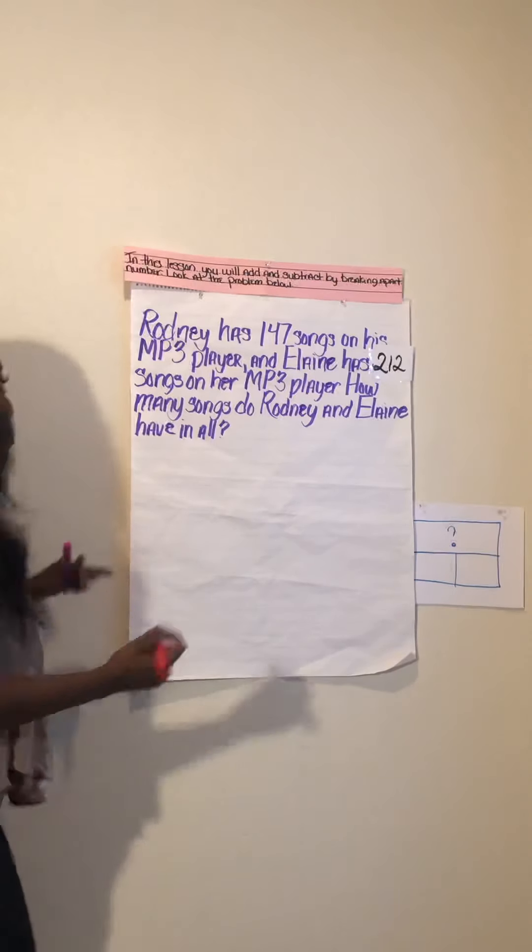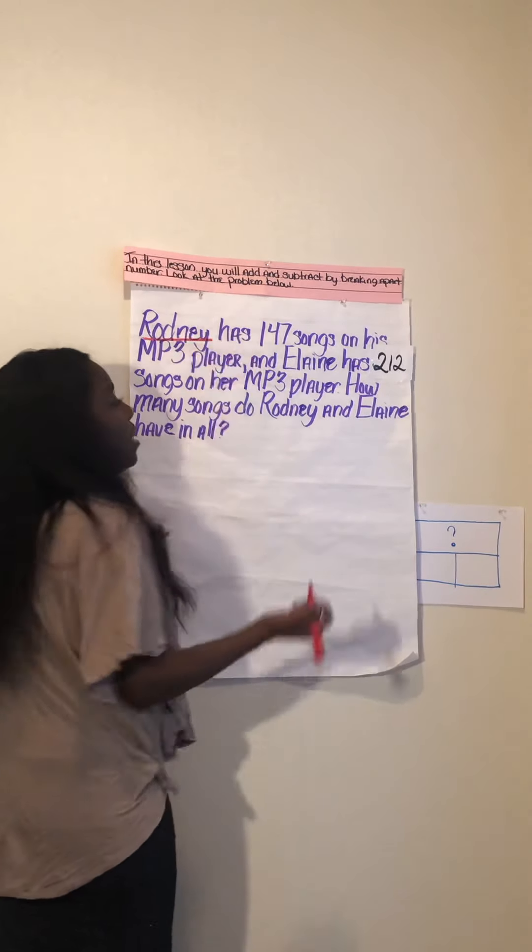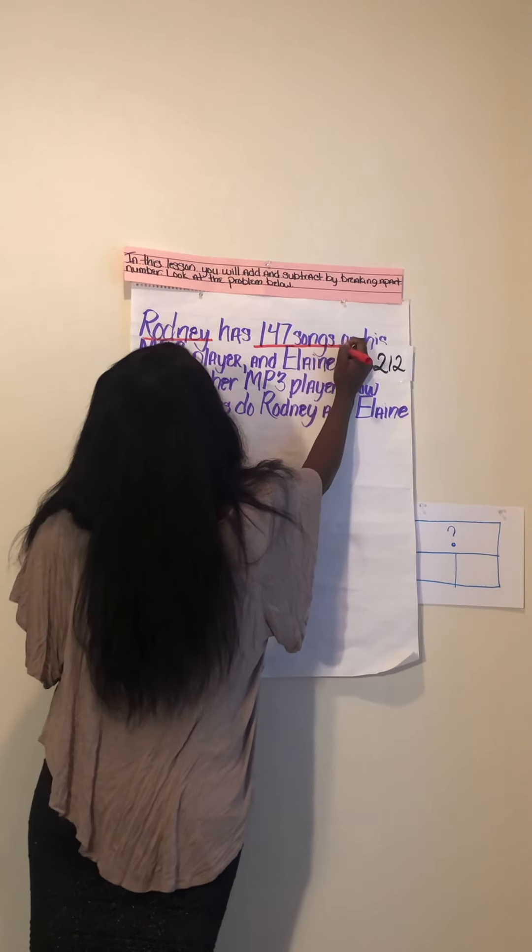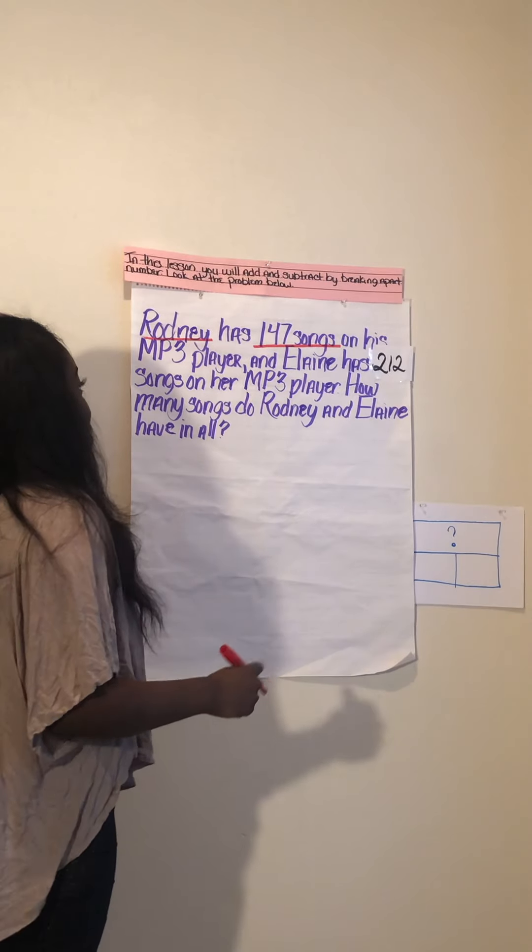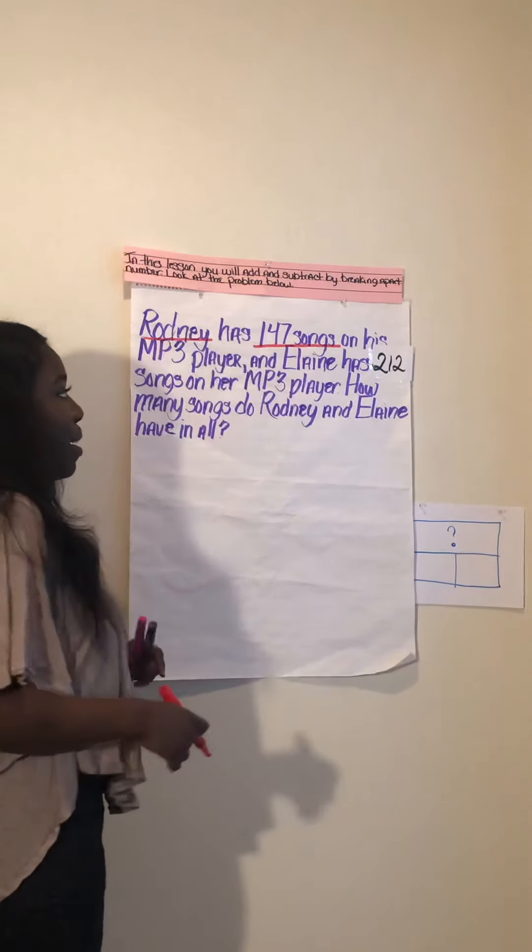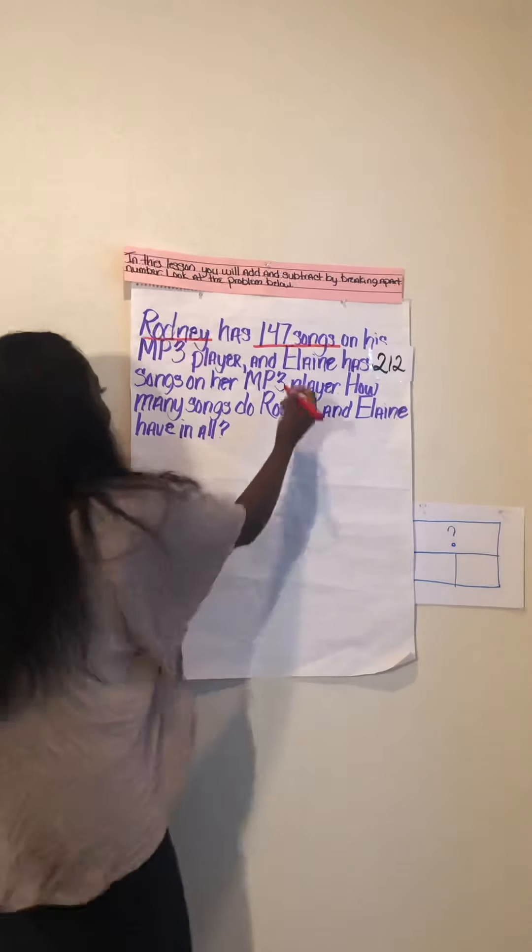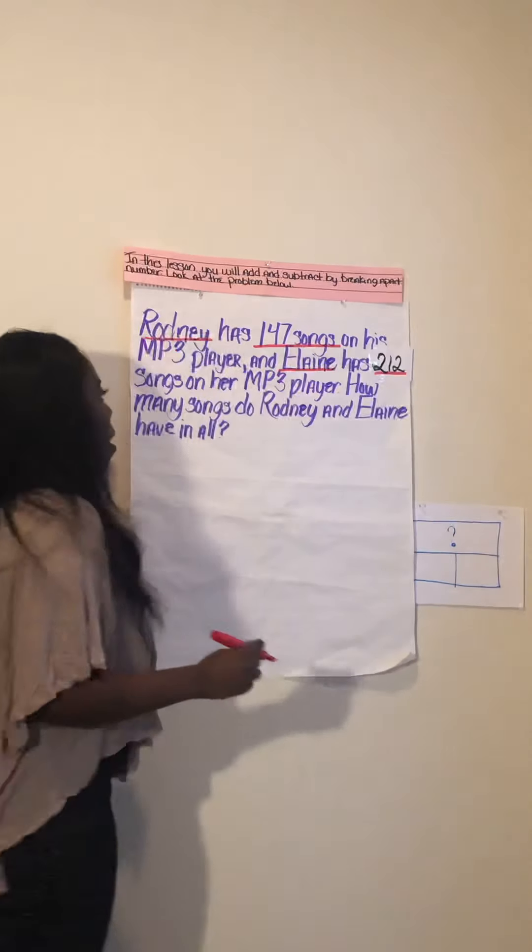First off I'm going to underline the word Rodney because he's one of the characters in our math story, and I'm also going to underline the number 147 and the word songs because that's how many songs Rodney has on his MP3 player.